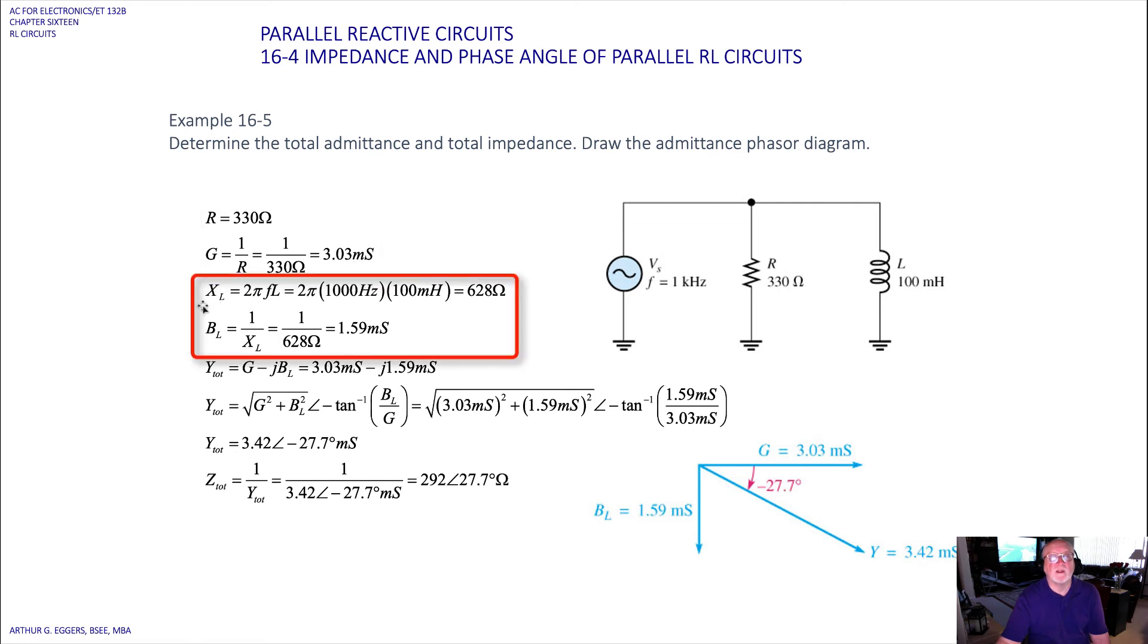2πfL, that gives us 2π times 1000 hertz times 100 millihenrys, or 628 ohms. B sub L then, the inverse of X sub L, our susceptance, gives us 1 over 628 ohms, or the inverse 1.59 milliSiemens.